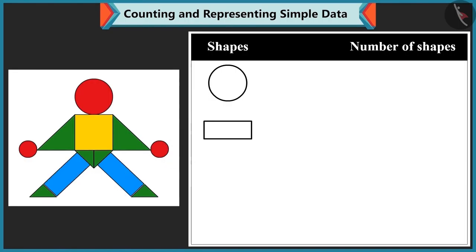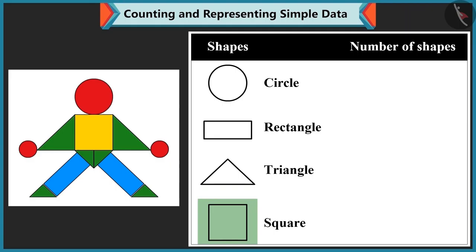This is a rectangle. Come on. Now tell me the names of these shapes. This shape is a circle. This is rectangle. This one is triangle. And this shape is square.